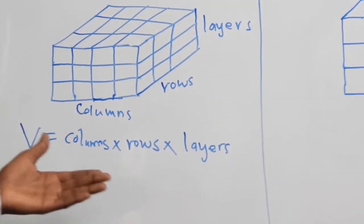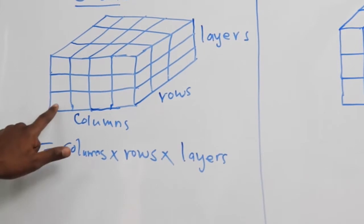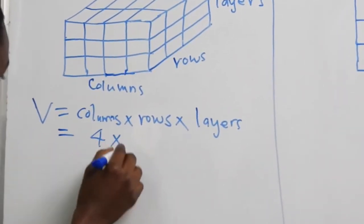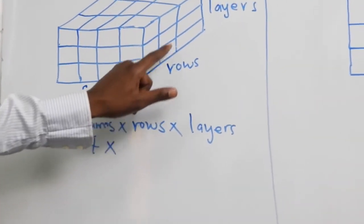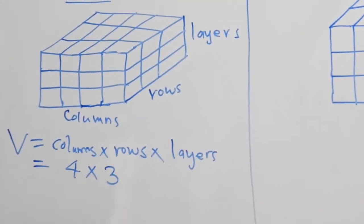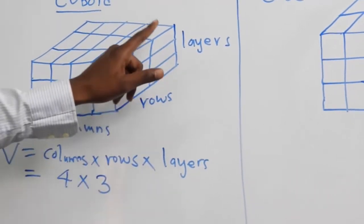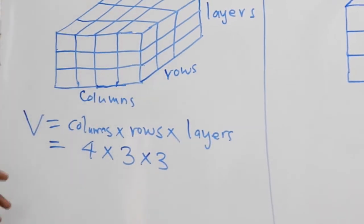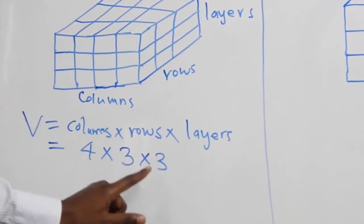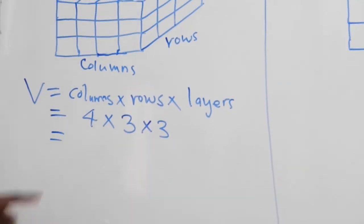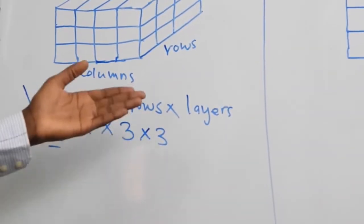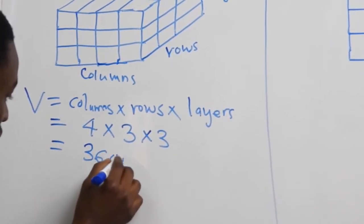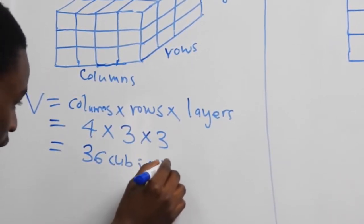In our cuboid, how many cubes do we have in the columns? We have 1, 2, 3, 4 — so we have 4 times 1, 2, 3 — 3 cubes along the rows — times 1, 2, 3 — 3 cubes along the layers. So we have 4 times 3 times 3, which is equal to 4 times 3 is 12, 12 times 3 is 36 — which is equal to 36 cubic units.